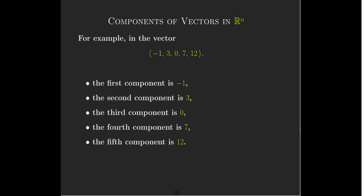And so the components, again, they're ordered, it matters. So in this vector here, which has five components, so it belongs to R5. The first component's negative one, the second one is three, the third component is zero, the fourth component is seven, and the fifth component is 12.